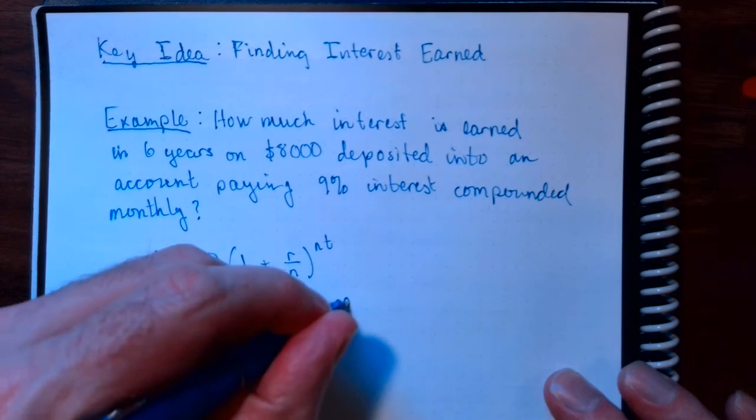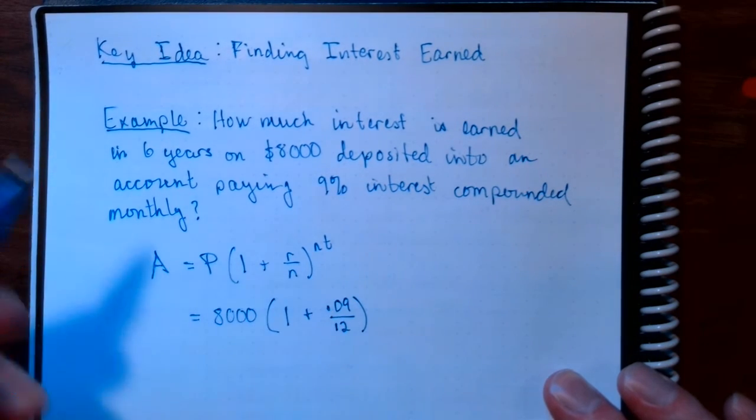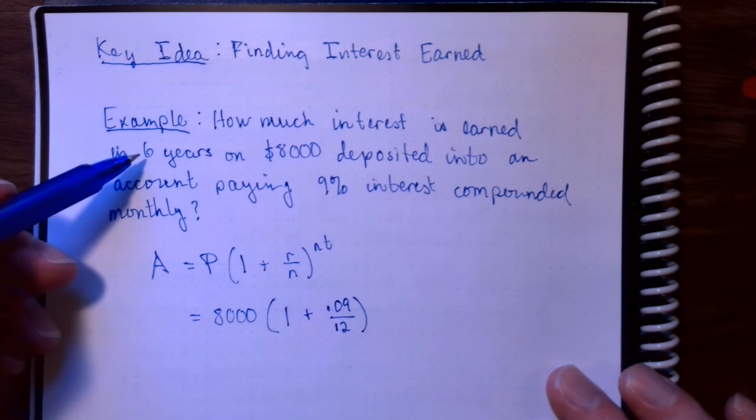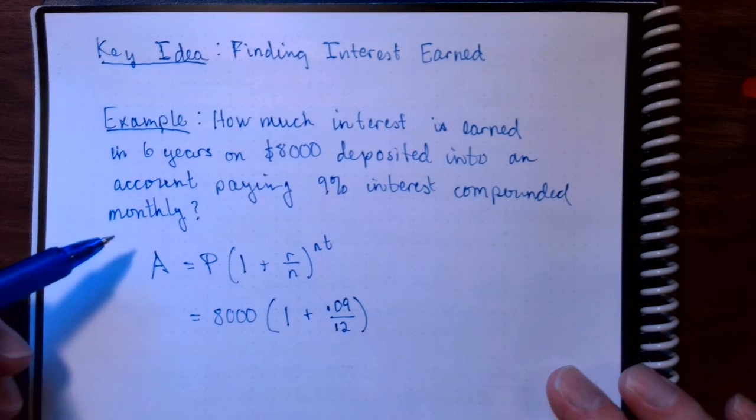Now the rate, 9%, 0.09. Monthly compounding means that's a 12. Now they tell me in the problem that we are leaving the money in the account for 6 years, but it's compounded monthly.